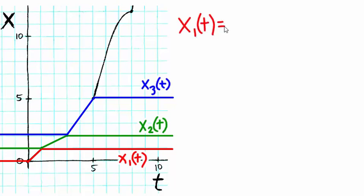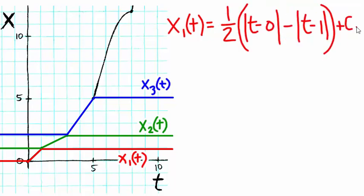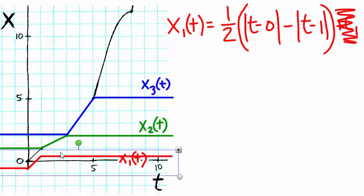Let's start with x1. This equation, without a particular constant at the end, actually gives me this, a graph that's a little bit too low.